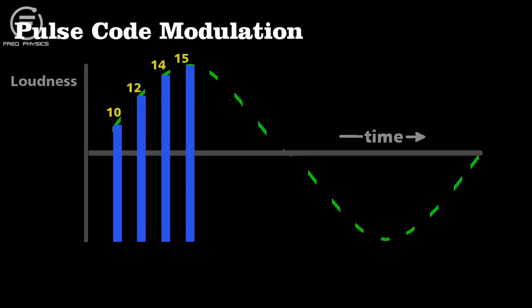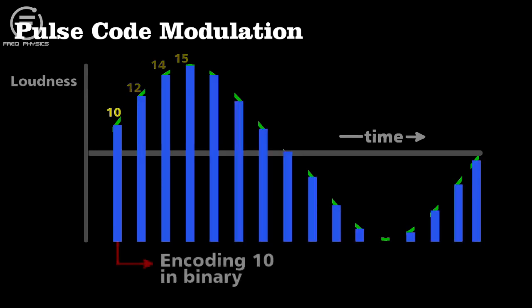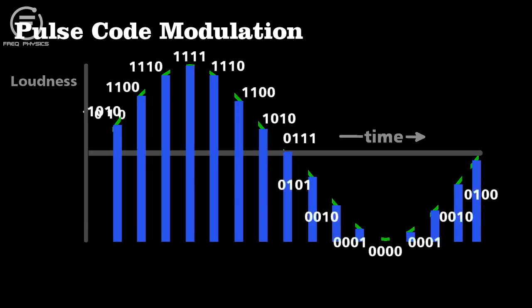We then take each section and convert its amplitude to a series of ones and zeros. The first bar of value 10, when encoded, becomes 1, 0, 1, 0. We can do this for each section of the curve.